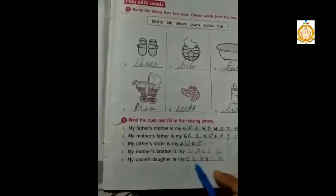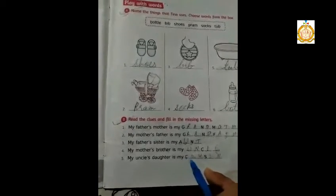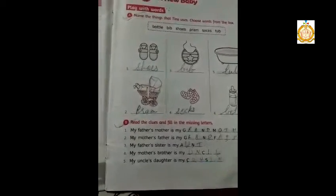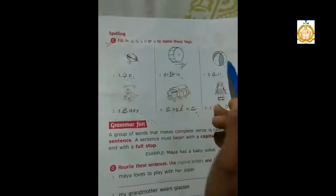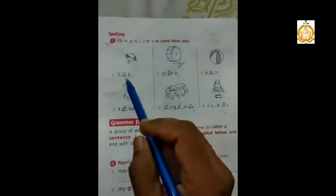Now next exercise, Exercise C: Fill in A, E, I, O, or U to name these toys. There are some toys. We will fill in these blanks.